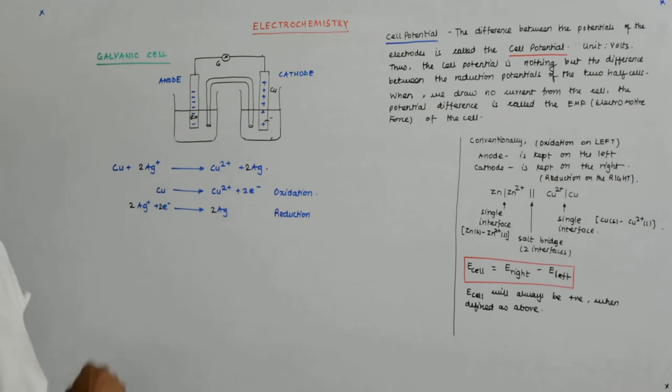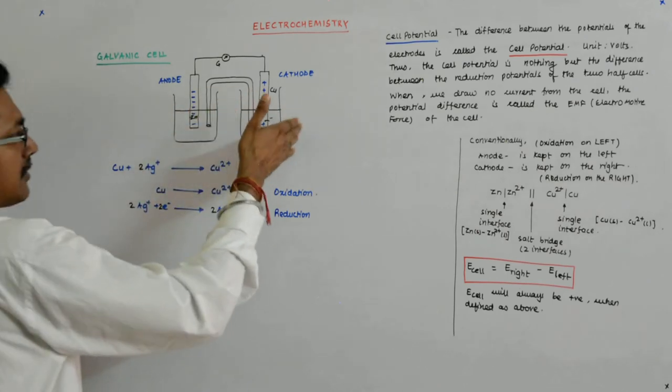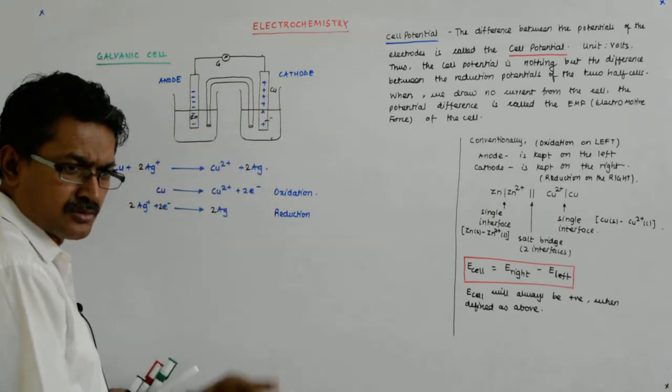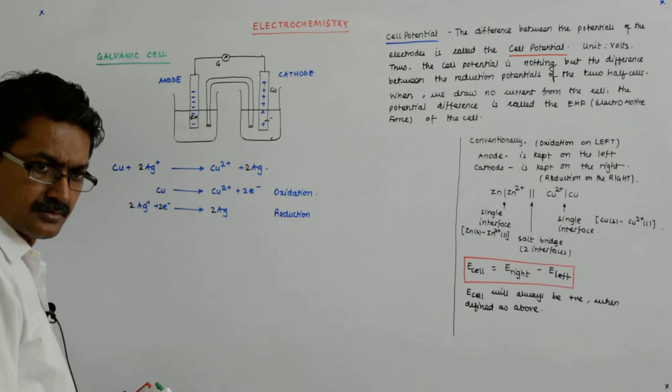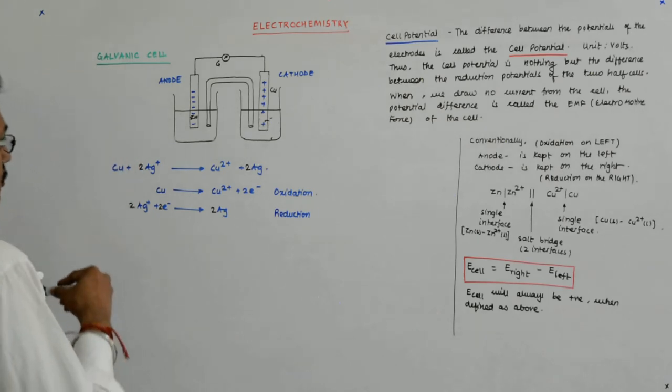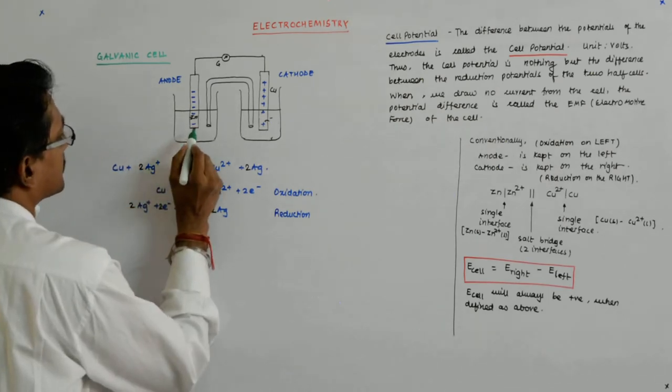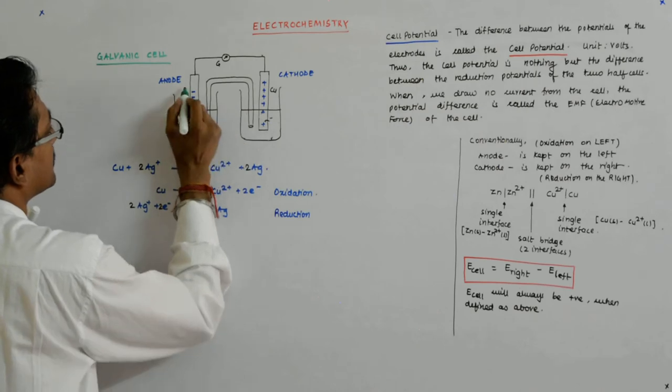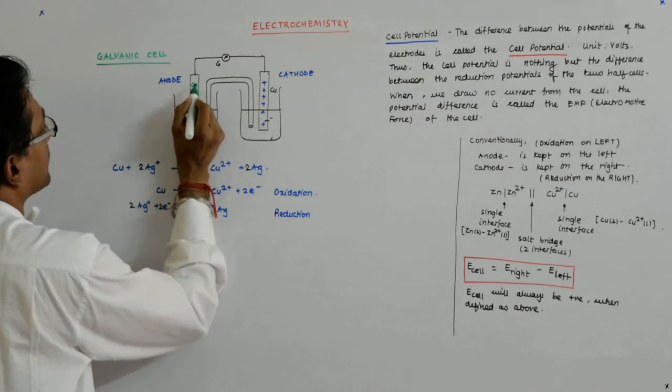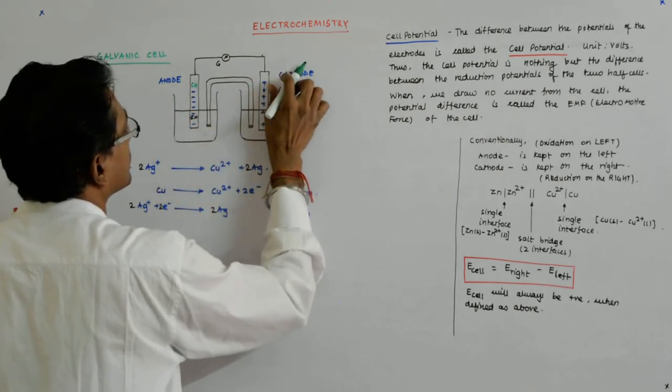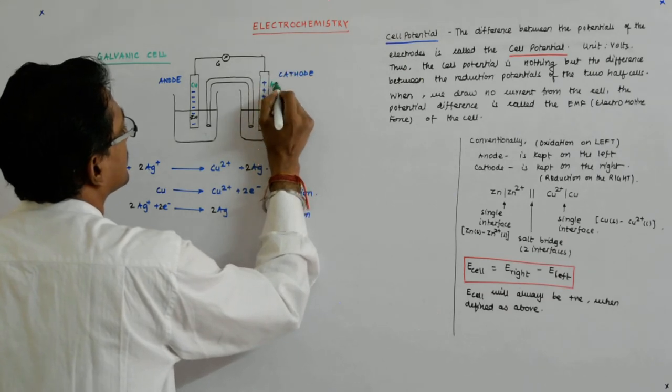To the left is oxidation, so the copper which was here now shifts to the left. This is copper and this is silver.